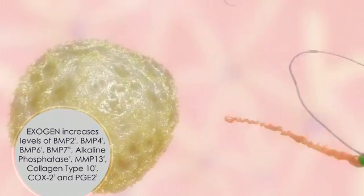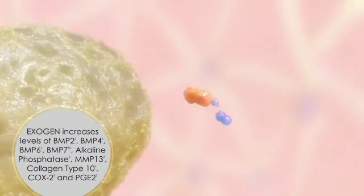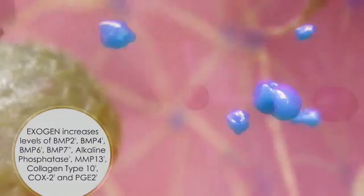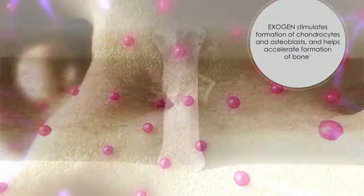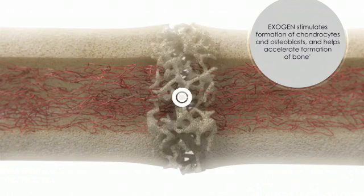By increasing the levels of bone morphogenetic proteins and other specific growth factors, the Exogen signal stimulates the formation of chondrocytes and osteoblasts and helps accelerate the formation of bone.